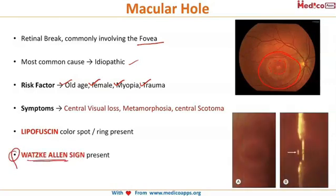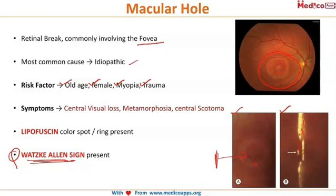An important MCQ topic is the Watzke-Allen sign. When you present a patient with a slit beam over the macular hole, the patient does not see a straight line — instead, they see the line as broken. This indicates a macular hole and is called the Watzke-Allen sign.